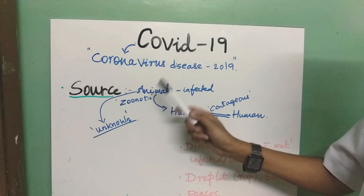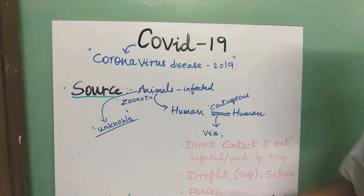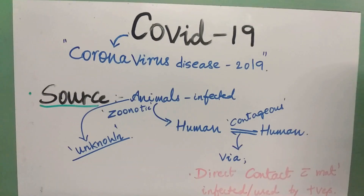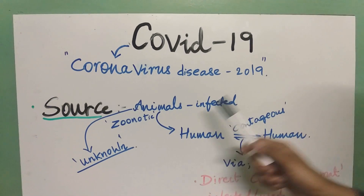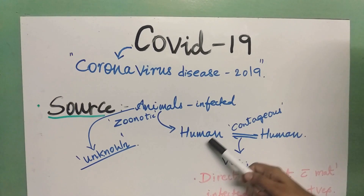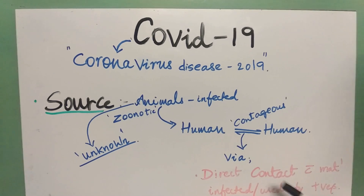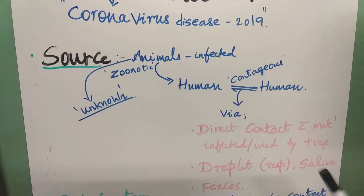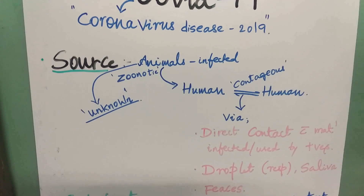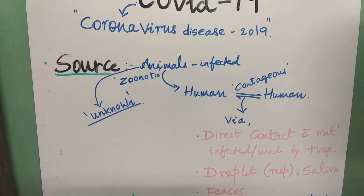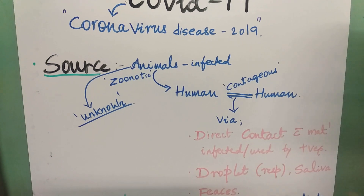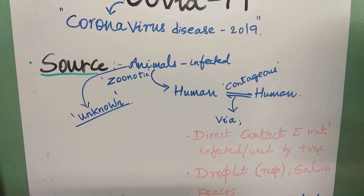The sources of COVID-19 are believed to be animals — zoonotic — and human to human, which is contagious. Animals infected with the Corona Virus can be consumed by humans and cause infection. From human to human, it is caused by direct contact with materials used by the infected person, and also through respiratory droplets, saliva, and feces.